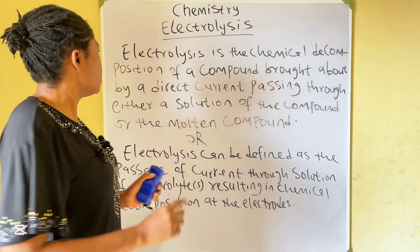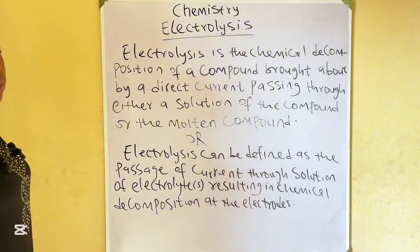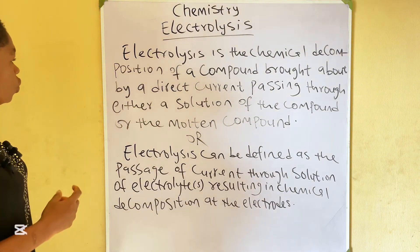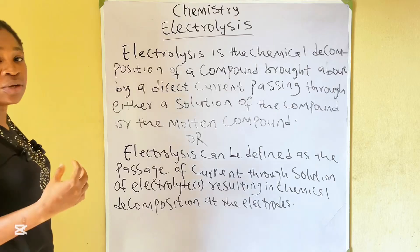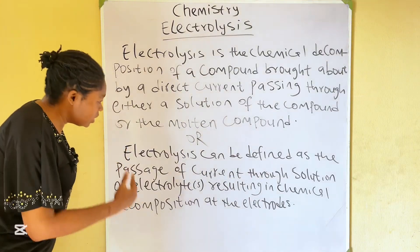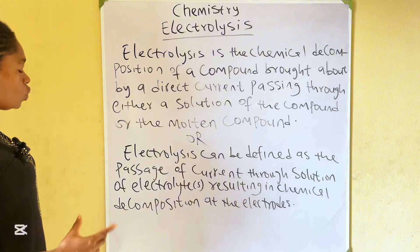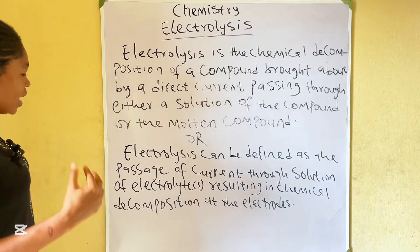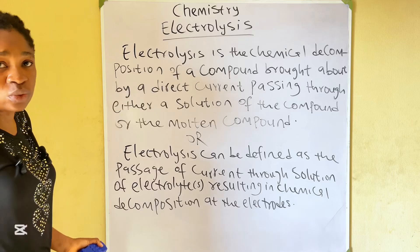Let's look at the meaning of electrolysis. Electrolysis is the chemical decomposition of a compound brought about by a direct current passing through either a solution of the compound or the molten compound. Or, electrolysis can be defined as the passage of current through a solution of electrolytes resulting in chemical decomposition at the electrodes.